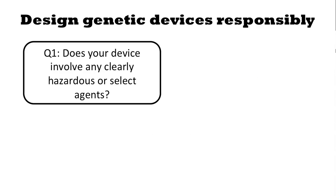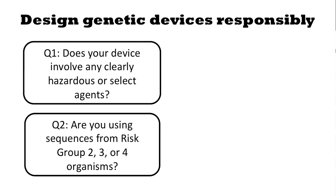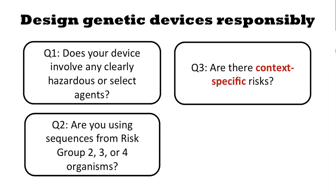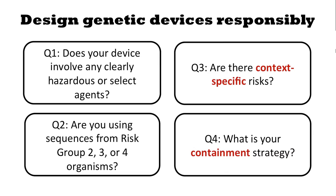Designing genetic devices responsibly can be quite complicated. Some of the questions are easy: Does the device involve any clearly hazardous or select agents? Are you using sequences from risk group 2, 3, or 4 organisms? These are important questions to ask, but they're certainly not the entire story. You also have to consider whether there are context-specific risks, and what is your containment strategy.